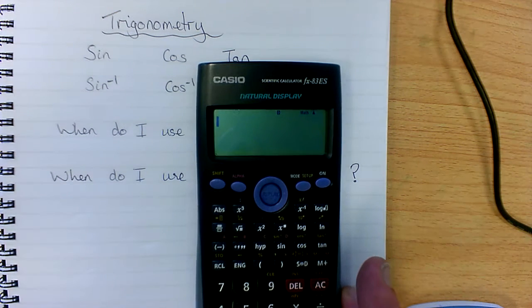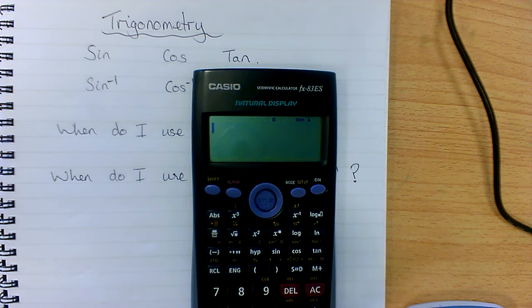So the first three, sin, cos and tan, they're quite easy to find. Sin, cos, tan, we would just enter them as they appear on the screen.